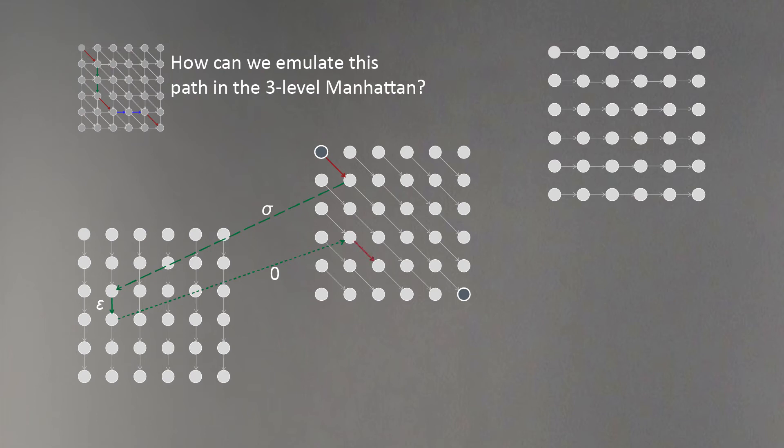After that, we can continue moving on the middle level. For example, we found a match between our sequences, and then if you want to represent a deletion, we need to move to the upper level, make some movements there, and go back to the middle level. We can finish our path.